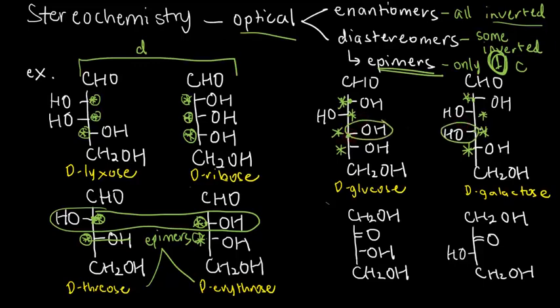which is carbon number four. This is carbon number four that has switched. And then the last carbon, both are at the right. So, since only one carbon has inverted between these two carbohydrates, we can say magic number one, we can also say that glucose and galactose are epimers.